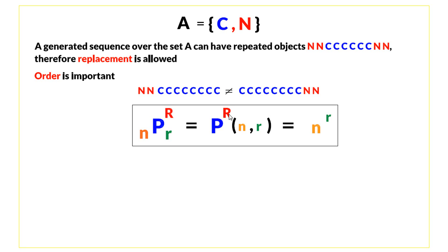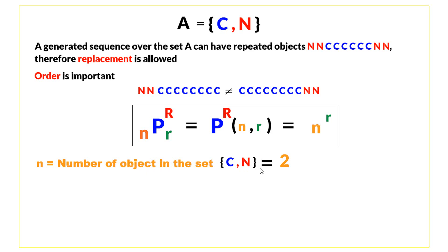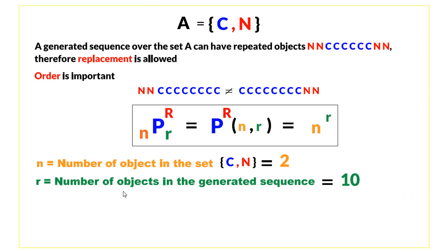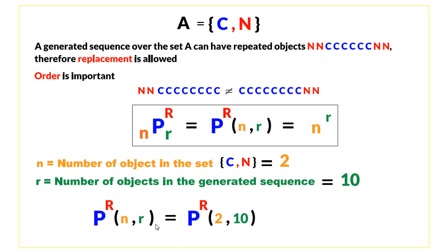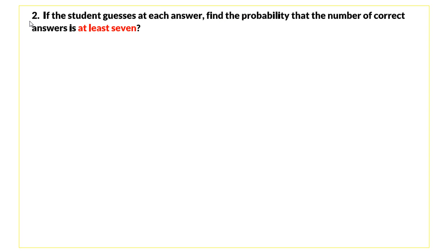Since replacement is allowed and order is important, we apply the formula of permutation with replacement for n objects taken r at a time. Here n is the number of objects in the set, which is 2 (either C or N), and r is the sampling size, which is 10. Substituting n=2 and r=10 gives 2 to the power of 10, which equals 1024 — the size of the sample space.